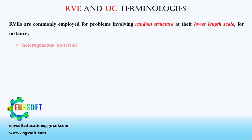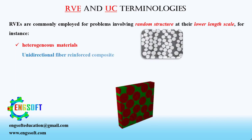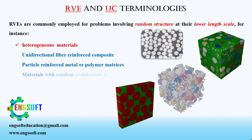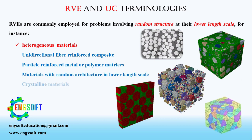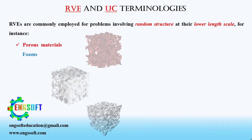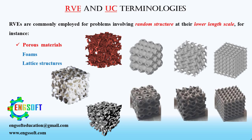For instance, heterogeneous materials such as unidirectional fiber-reinforced composites, particle-reinforced metal or polymer matrices, materials with random architecture at the lower length scale, crystalline materials, or porous materials like all types of foams and lattice structures.